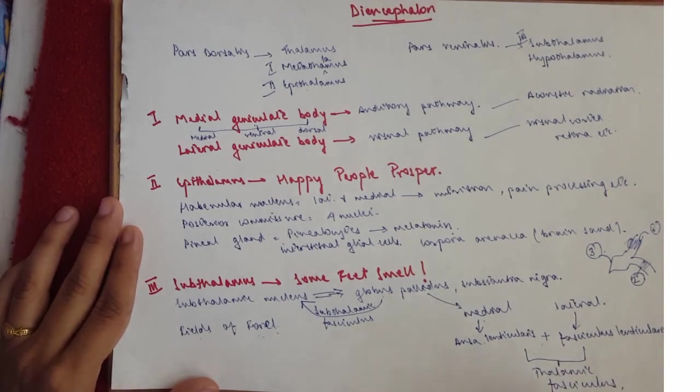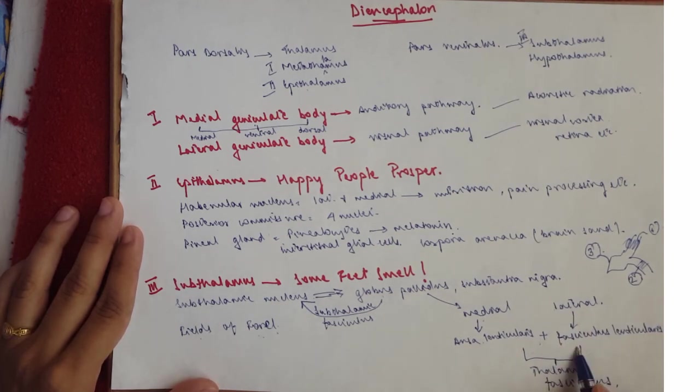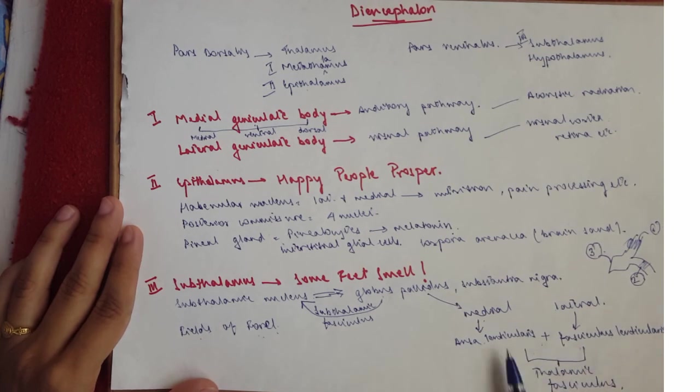And there are two types of fields of Forel: H1 and H2. This on its own is H2, and this together is H1.